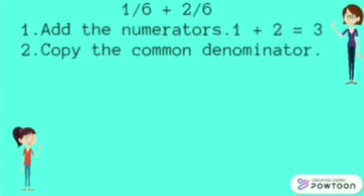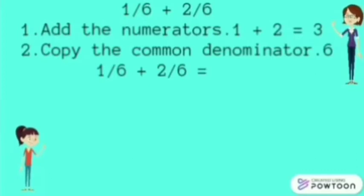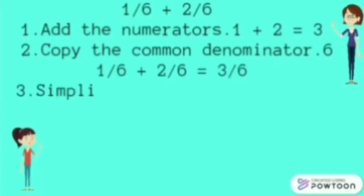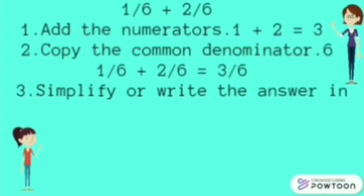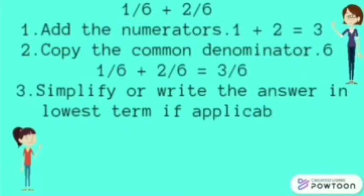Then, simplify or write the answer in lowest term. One-sixth plus two-sixths is three-sixths. To simplify three-sixths to its lowest term, we will divide our numerator and denominator by three. Three divided by three is one. Six divided by three is two. So, three-sixths reduced to its lowest term is one-half.